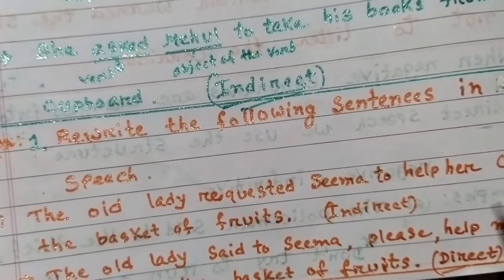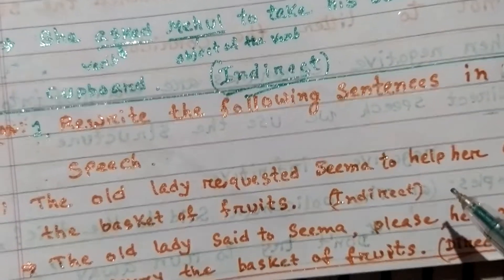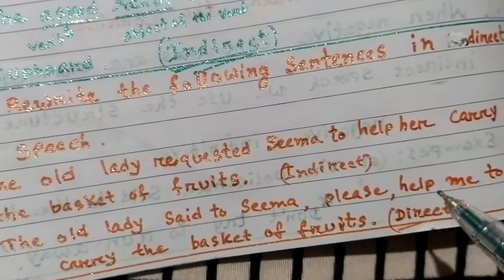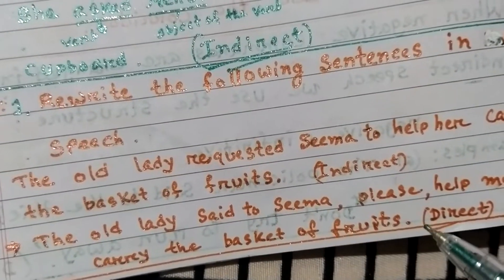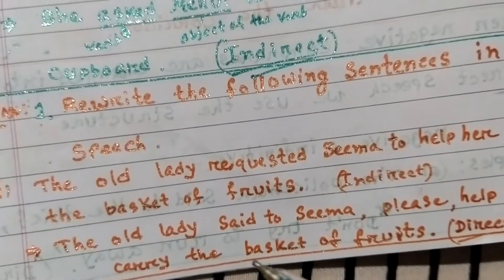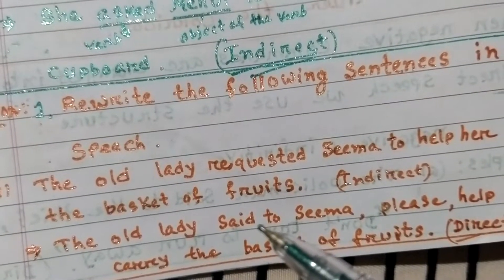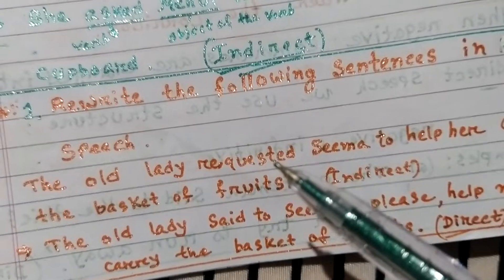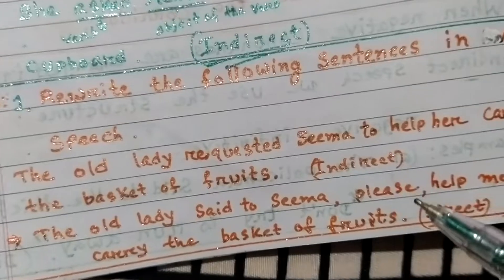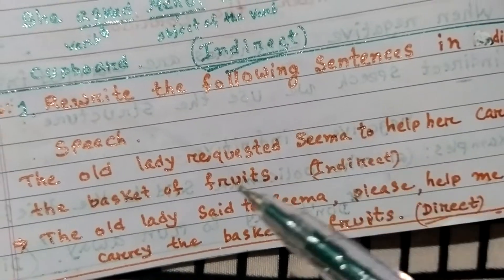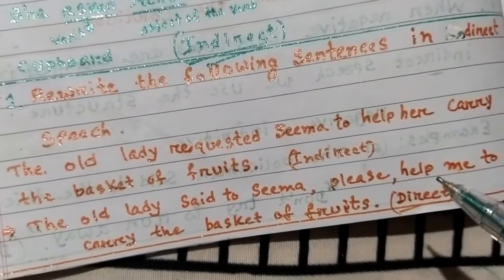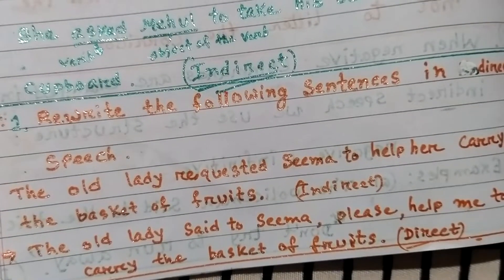Q1 Number 1: Indirect speech — 'The old lady requested Sima to help her carry the basket of fruits.' In direct speech: 'The old lady said to Sima, please help me to carry the basket of fruits.' Since 'requested' is used in indirect speech, 'please' is added and 'said' is used in direct speech.